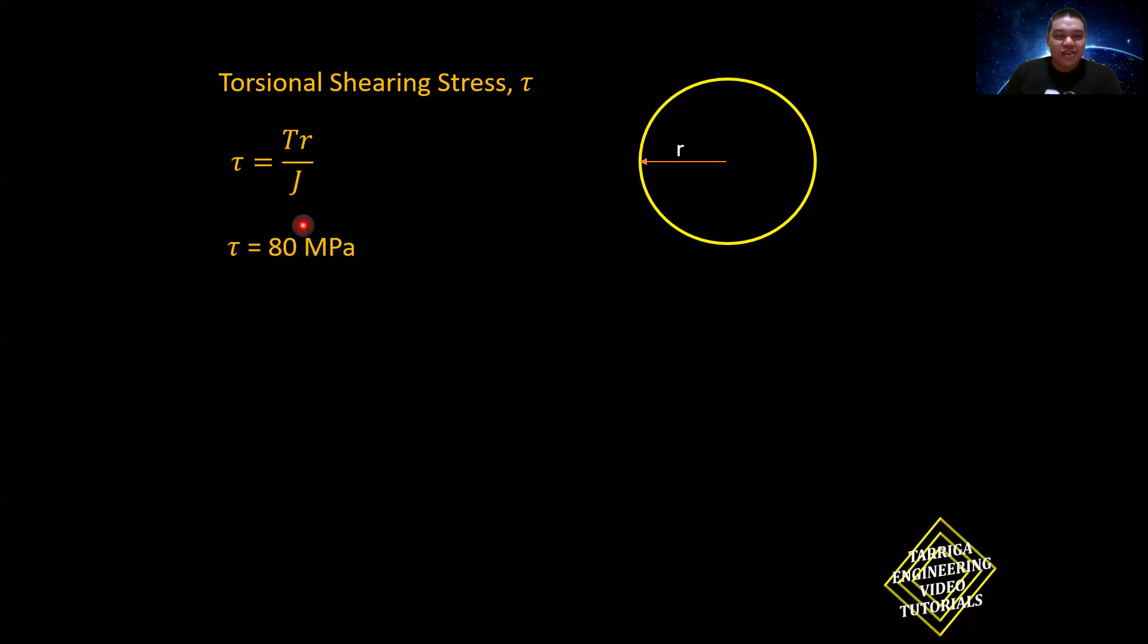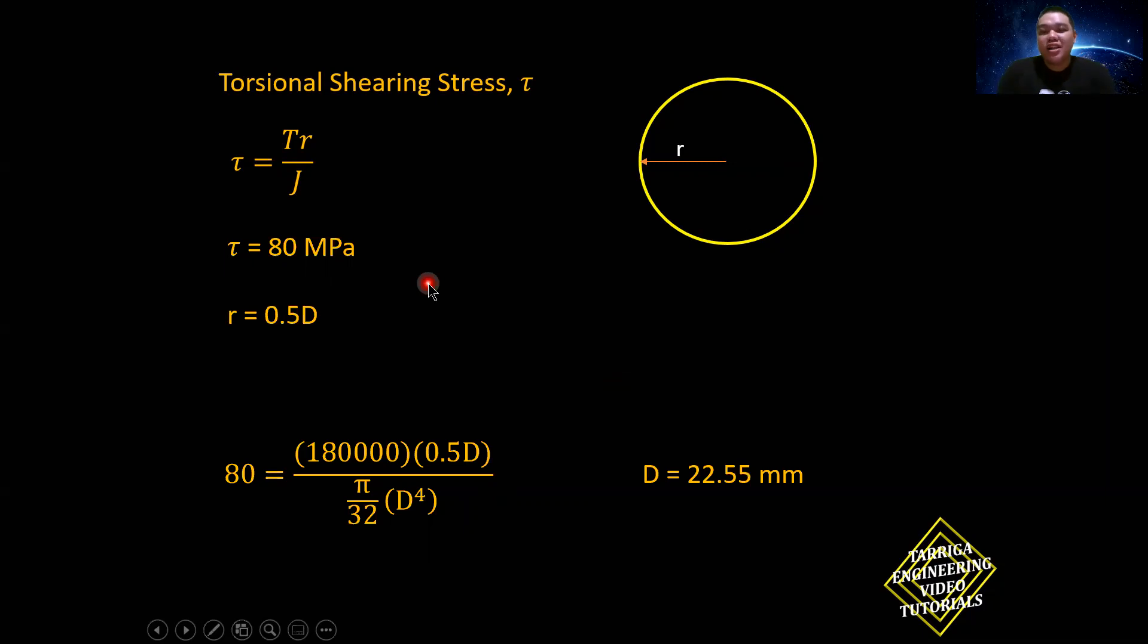R, or the radius of curvature, is expressed in diameter. Of course, that is one half of the diameter. And J is what we solved earlier. Substitute all of the parameters. You can now solve for the diameter. And it came out 22.55 mm.